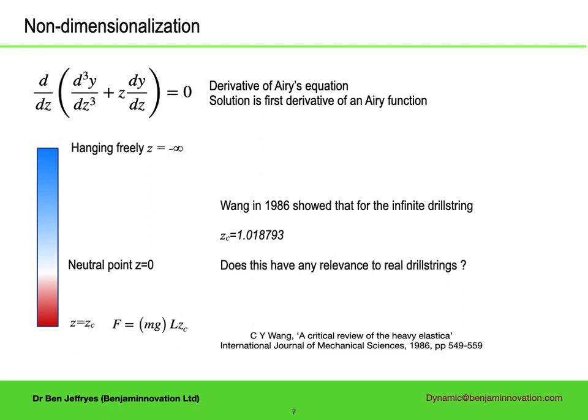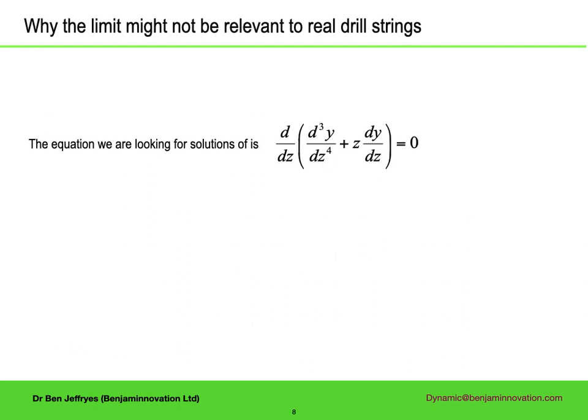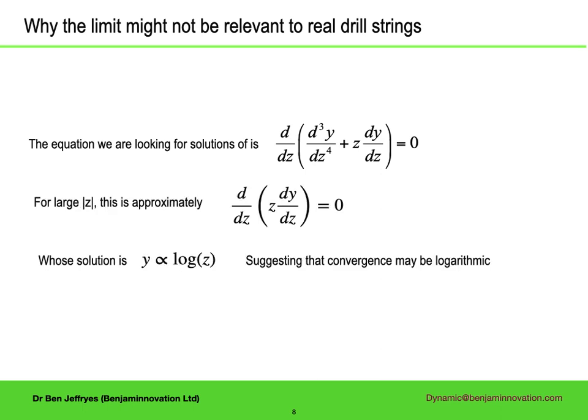Except of course real drill strings are not infinite. Other authors using other approximations have tended to come up with larger values of zc. So is this infinite limit relevant for real drill strings? There is a hint from the equation that convergence to the limit may be slow. This is the equation. The second term grows with z, so for large absolute values of z, there is an approximation which is to remove the first term, the solution of which is a logarithm. So this hints that convergence may also be logarithmic.